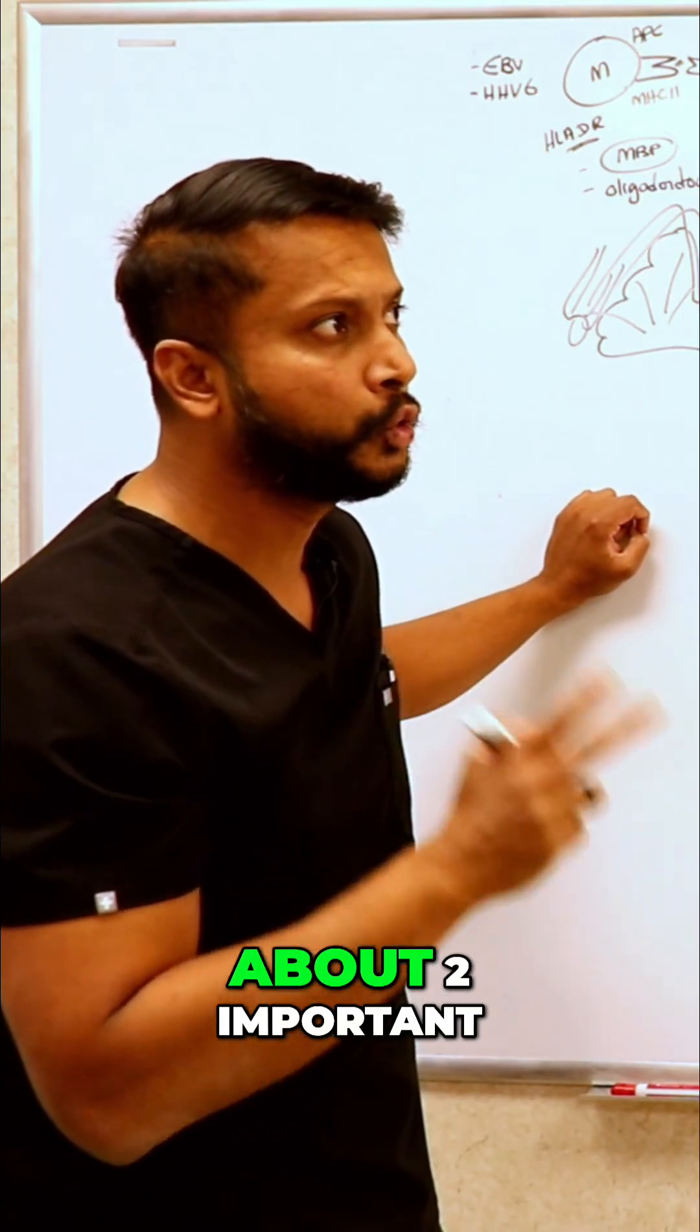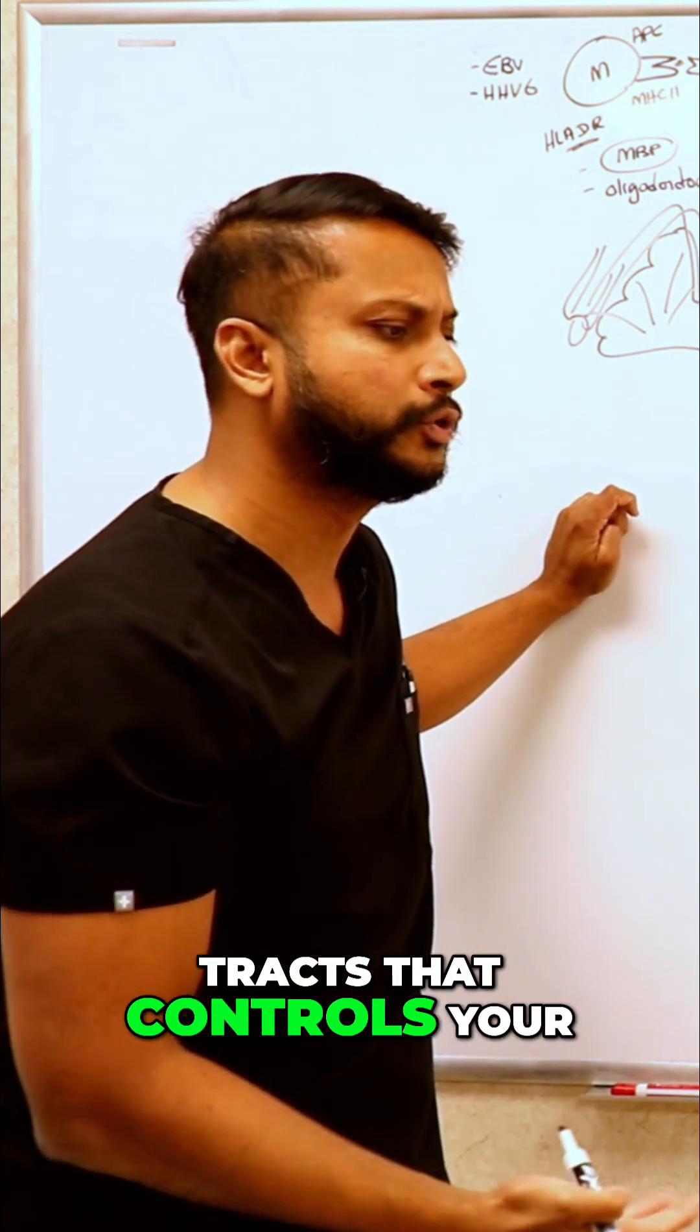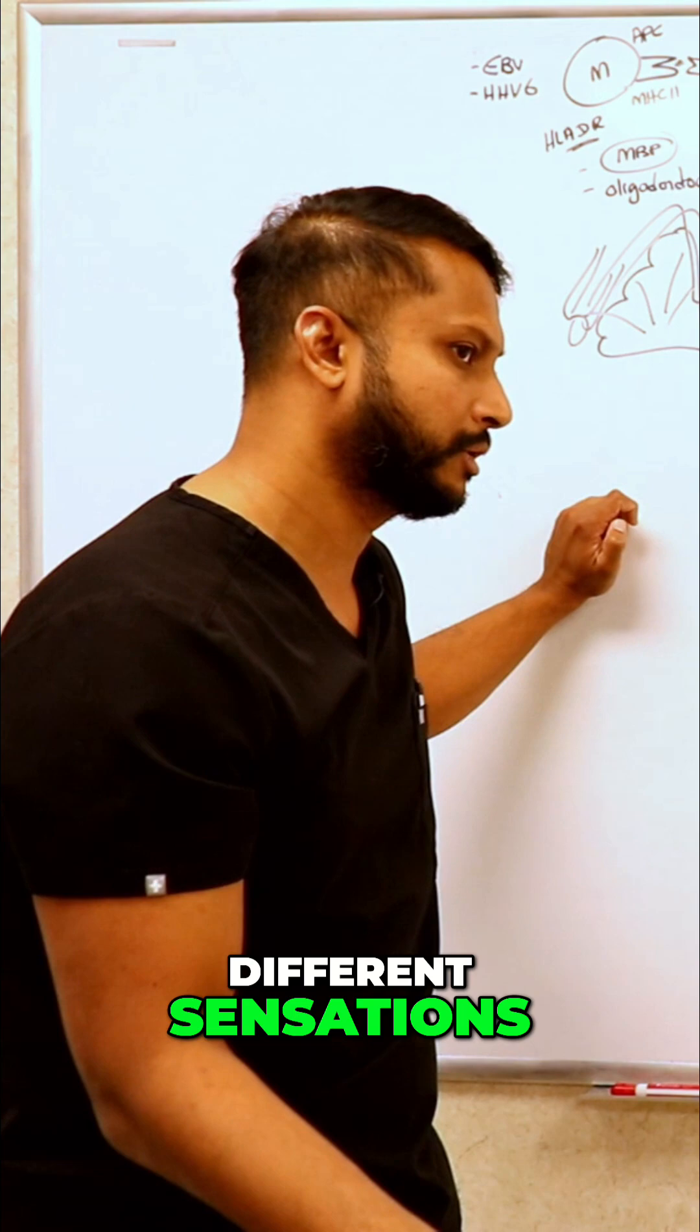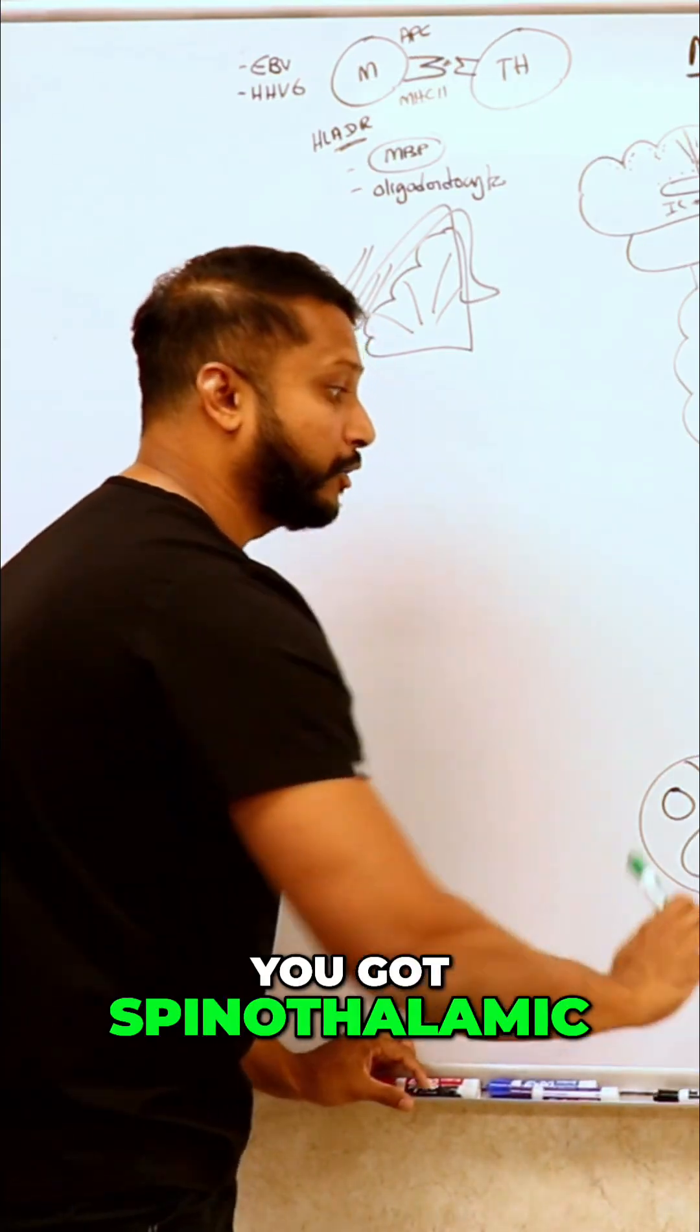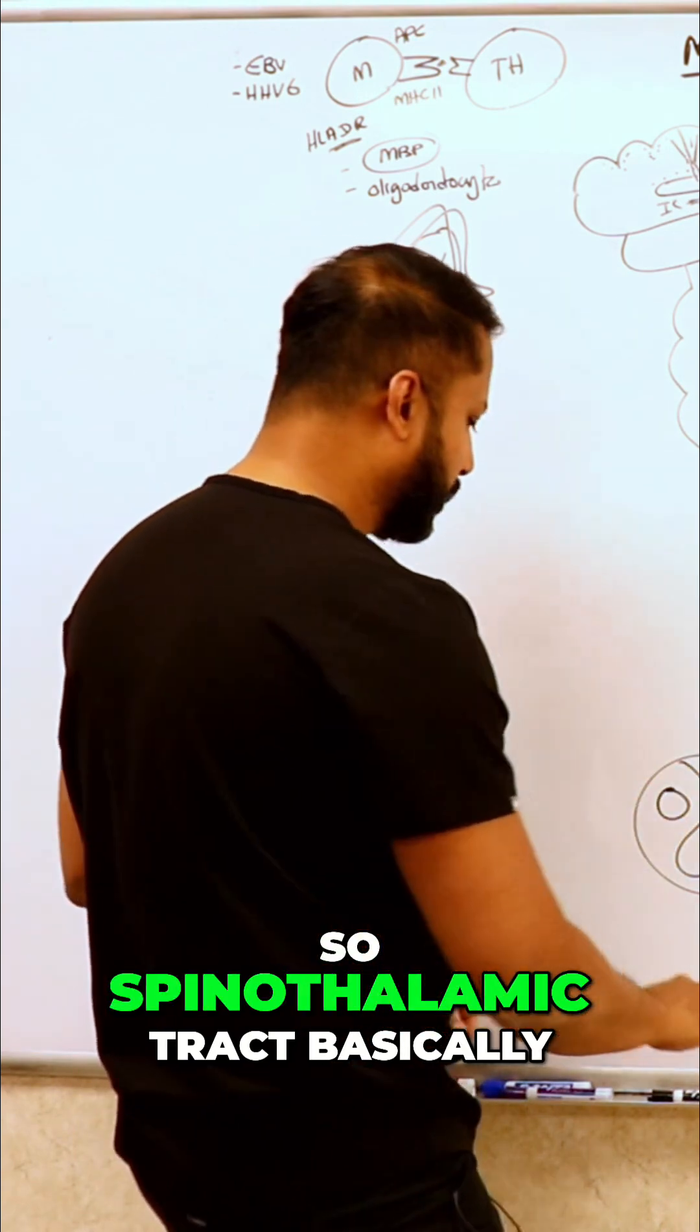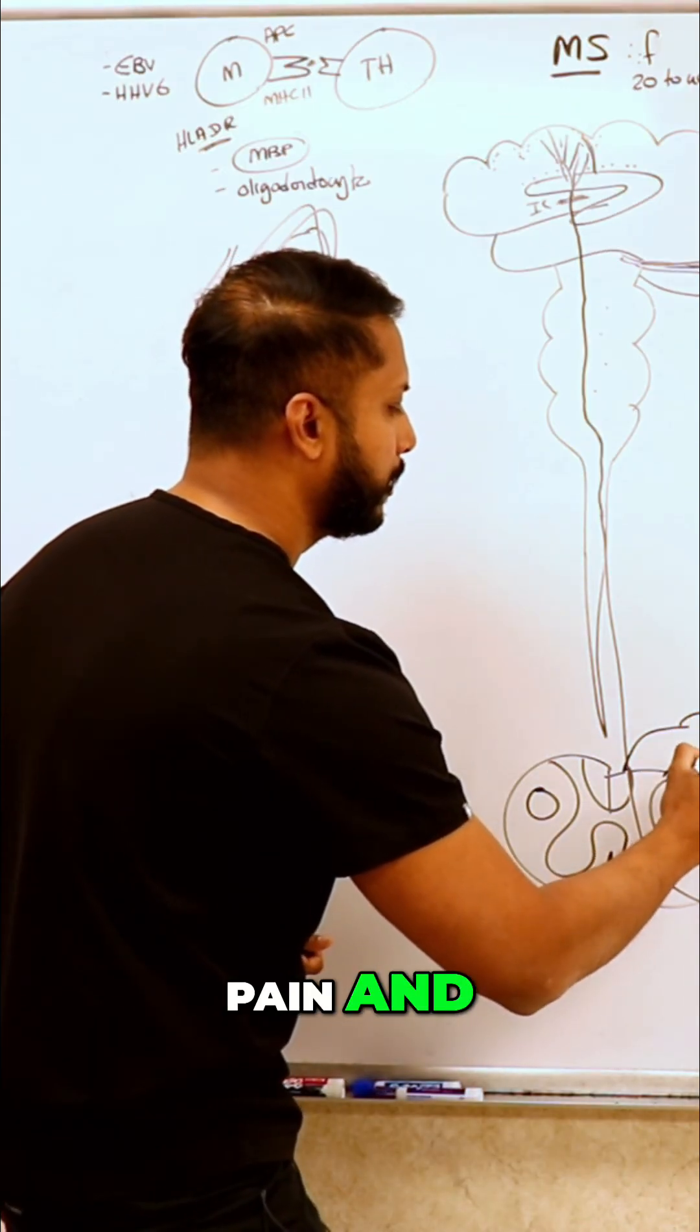Now we need to know about two important tracks that control your different sensations. What are the two tracks that we need to know about? You've got spinothalamic, very good. So spinothalamic tract basically controls what? Pain and temperature.